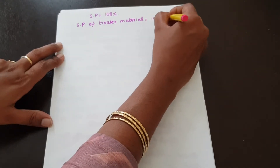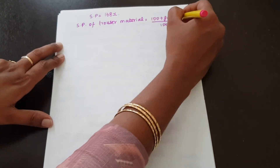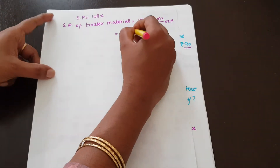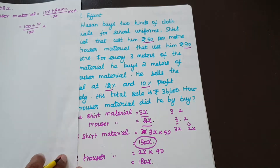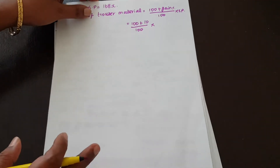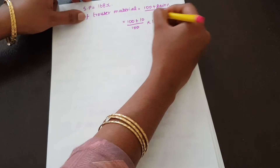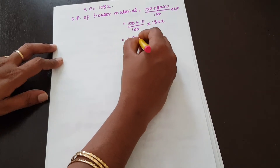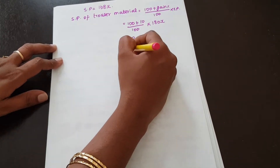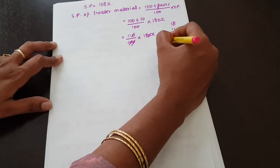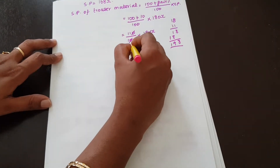Selling price of trouser material = (100 + 10) ÷ 100 × CP = 110 ÷ 100 × 180X. Simplifying: 18 × 11 = 198X. So the selling price of trouser material is 198X.